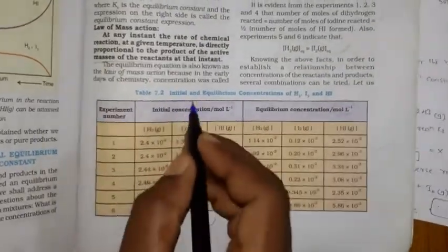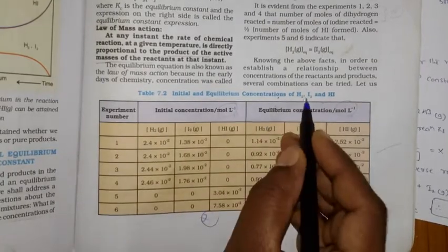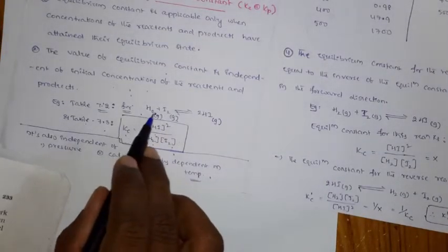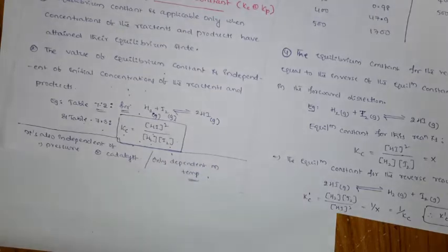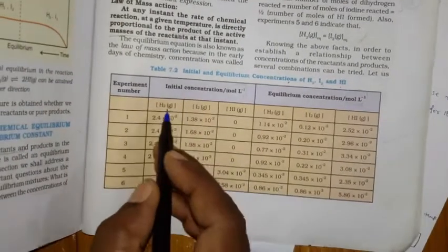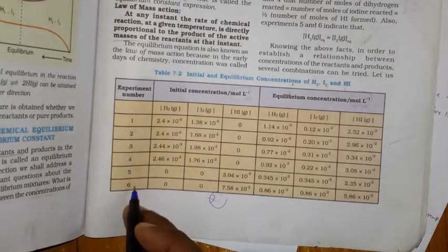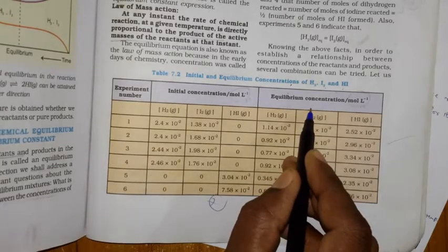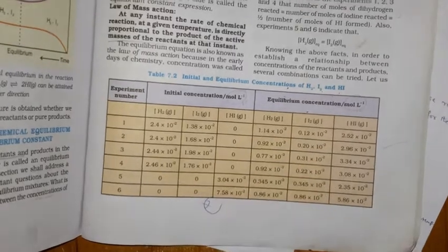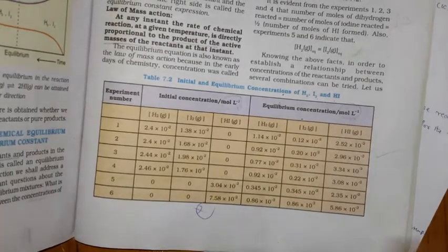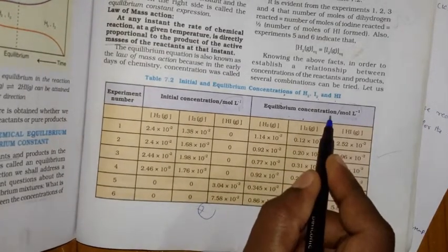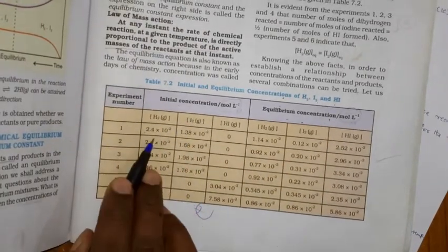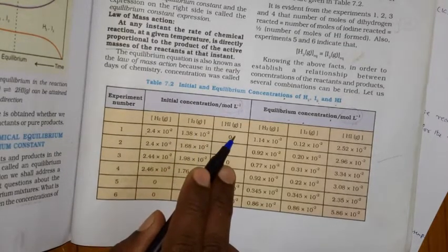Table 7.2 shows the initial and equilibrium concentrations for hydrogen, iodine, and hydrogen iodide. There are different experiments conducted, showing initial concentrations and equilibrium concentrations for the reaction hydrogen plus iodine in equilibrium with hydrogen iodide. For some sets, the initial concentration of HI is zero.